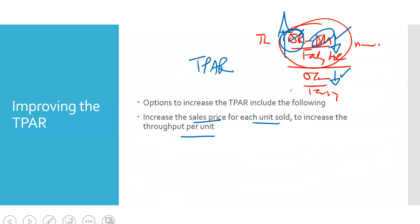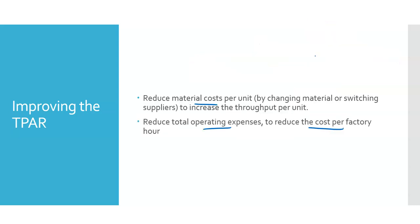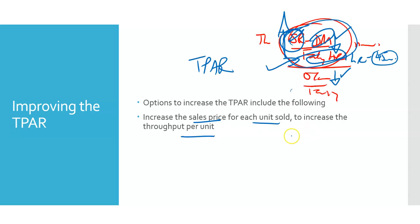So, in effect, if I can take this from one hour, if I can bring this down to 45 minutes, then ultimately this will also increase. Efficiencies will affect the time here. And that should improve your TPAR, because in effect, that would also bring down your operating costs as well.